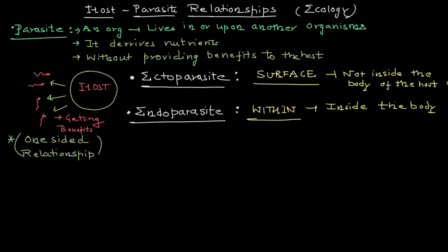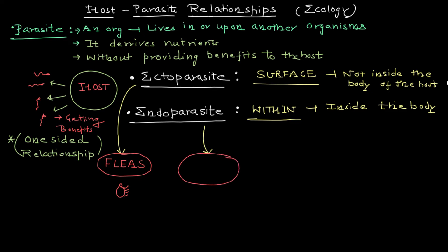Try to think of examples for ectoparasites as well as endoparasites. For ectoparasites, various fleas that we encounter are examples — they are not present inside the body; they live around the host and come closer to acquire nutrients from the host animal. For endoparasites, the example is Leishmania, which can cause some devastating parasitic infections and lives inside the body, so we call it an endoparasite.